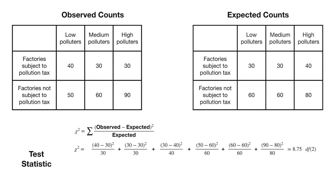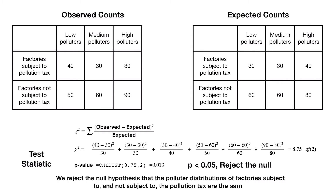To get the p-value, we can use Excel: CHIDIST of 8.75 with 2 degrees of freedom, and we get a p-value of about 1.3%. Since that p-value is less than 5%, we reject the null hypothesis — that is, we reject the hypothesis that the polluter distributions of factories subject to and not subject to the pollution tax are the same.